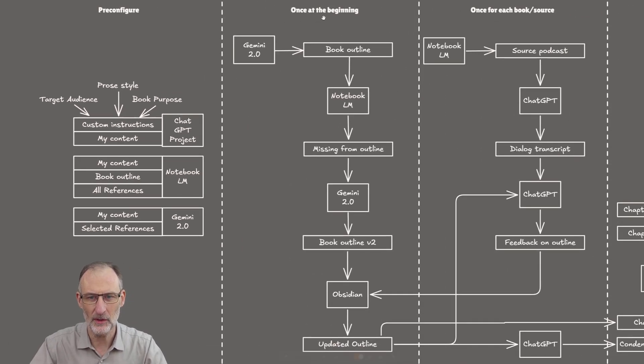So these are the tools that I've set up, and then let's look at my workflow. So first of all, let's look at this once at the beginning process. So what I did was I filled Gemini 2 with all of this data I mentioned, and I asked it to generate an outline for my book. So it produced an initial rough outline.